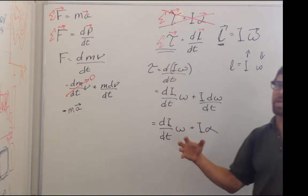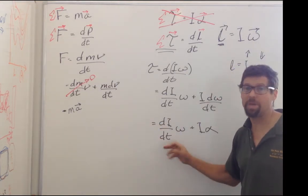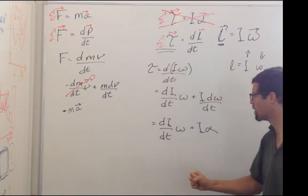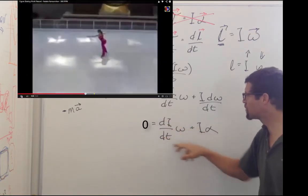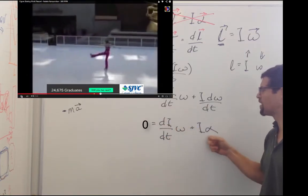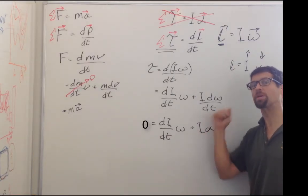And so what we can see with the ballerina as she pulls her arms in, this term is negative, because her moment of inertia is getting smaller. And so if this term is negative, this term is positive, or you have positive angular acceleration, and your omega is increasing.